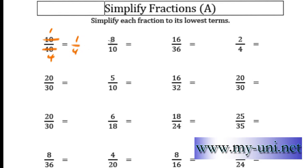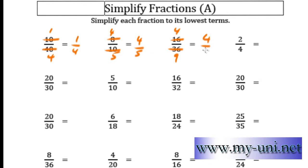We can use the 2 times table for the next one. 2 times 4 is 8 and 2 times 5 is 10, so the answer is 4 over 5. Again, we can use the 4 times table for this one — 16 and 36 are multiples of 4. 4 times 4 is 16 and 4 times 9 is 36, so 4 over 9 cannot be further simplified. 4 over 9 is the answer.